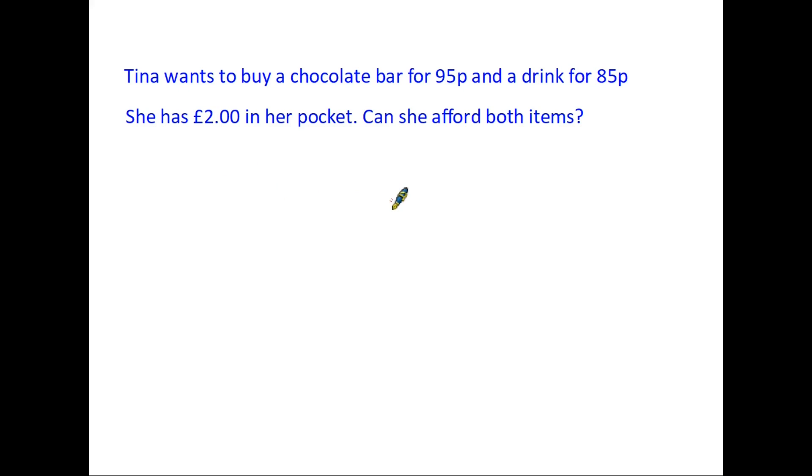Now here's a question where we actually have to change the answer to a sum in order to answer the question. Tina wants to buy a chocolate bar for 95p and a drink for 85p. She has £2 in her pocket and we're being asked can she afford both items? Well of course the first thing you want to do is add the 95p and the 85p together. If we do that we get the answer of 180 pence.